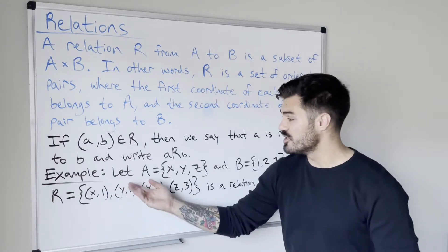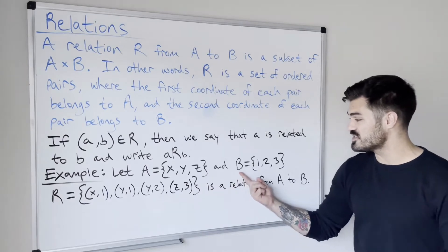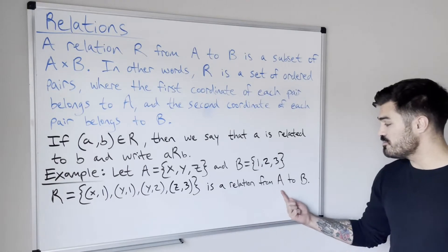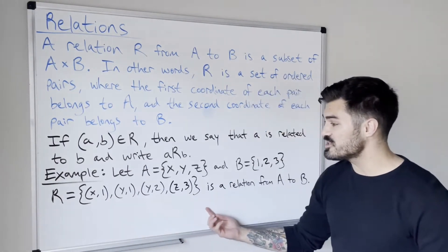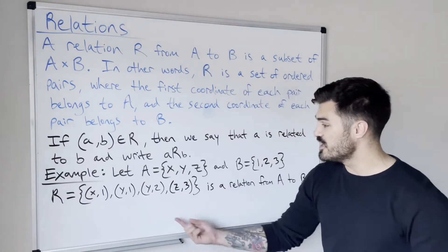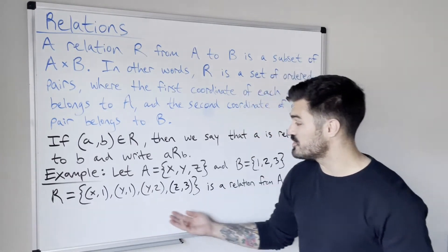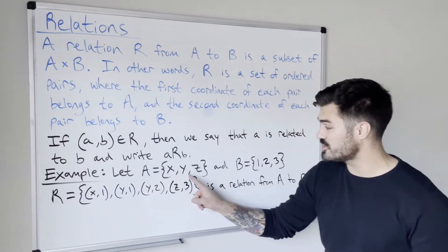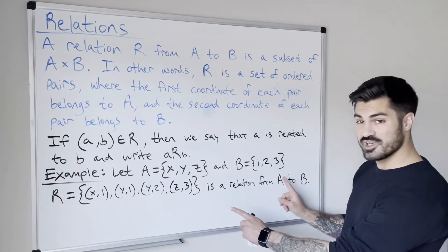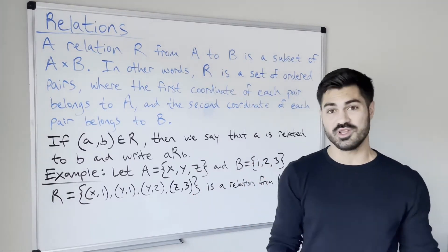Here's an example. If we define the set A as the set containing X, Y, and Z, and the set B is the set containing 1, 2, and 3, then here's an example of a relation from A to B. We have a set of ordered pairs where each of the first coordinates come from A, and each of the second coordinates come from B. There are a lot of different relations we could define — we could take the whole Cartesian product, which would be (X,1), (X,2), (X,3), and so on with every possible pairing.